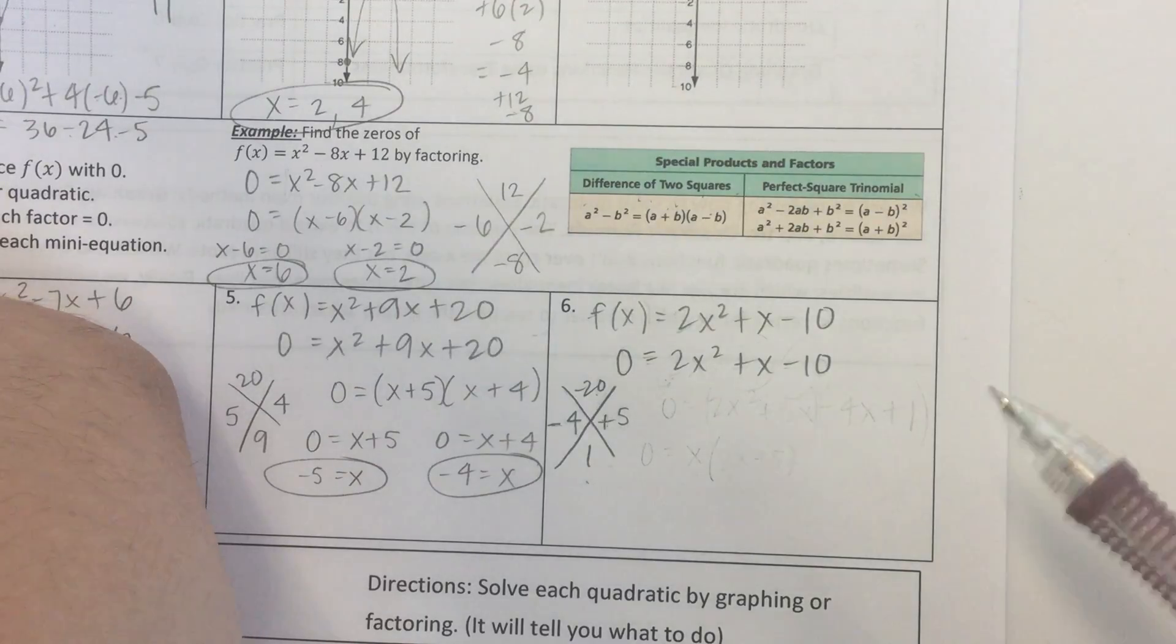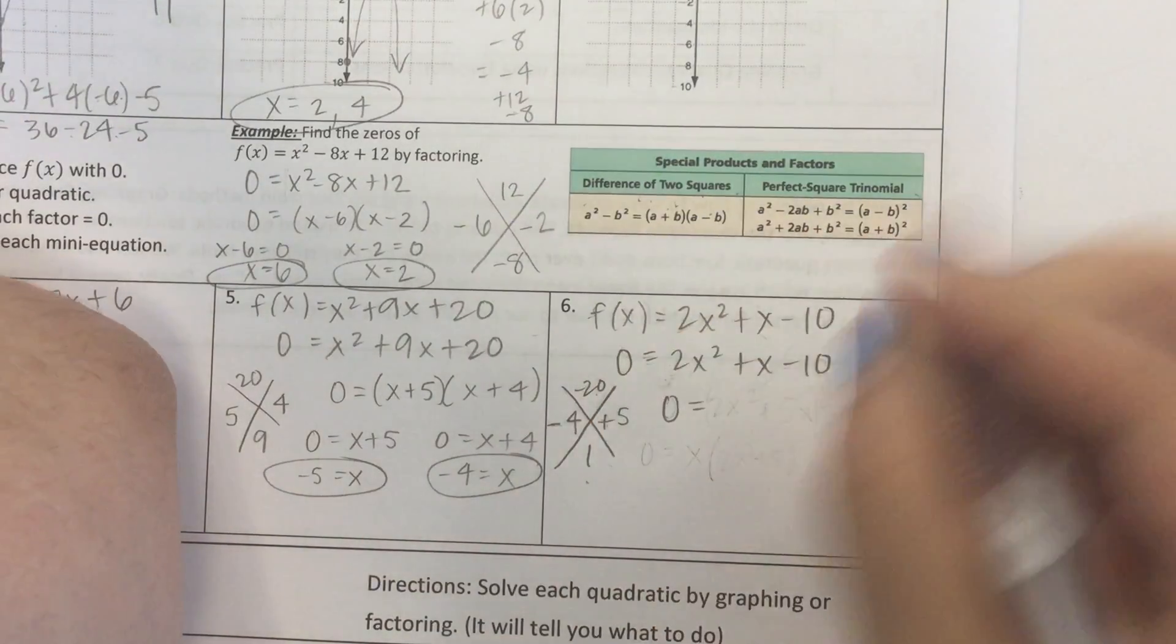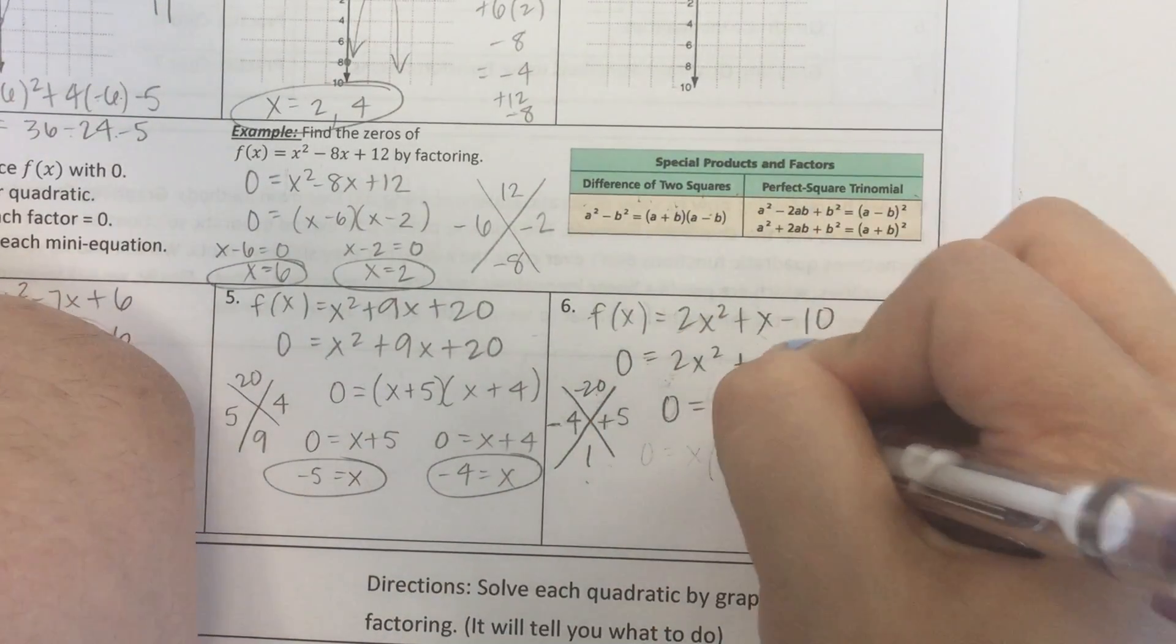Now, I want to show you a different method than the box method that you remember from last year. This is going to be factoring by grouping. It's really important that we know how to do this. So, we're going to start with our 0 equals, our 2x squared stays the same.